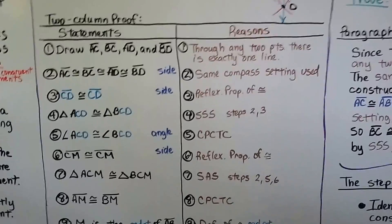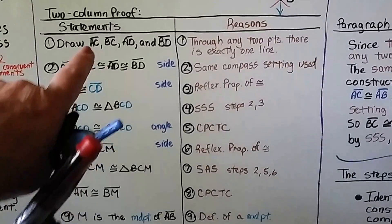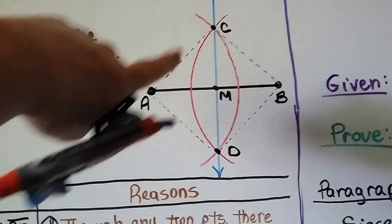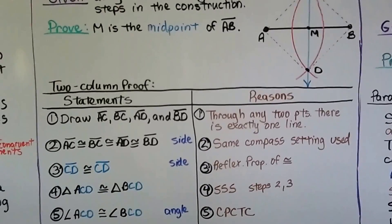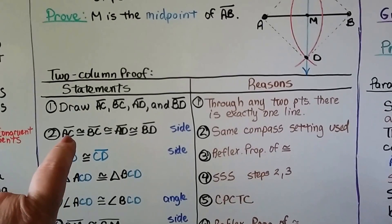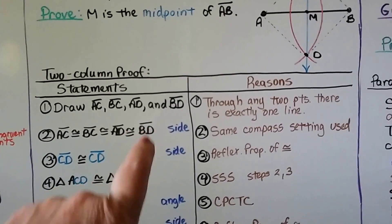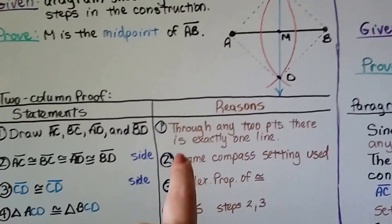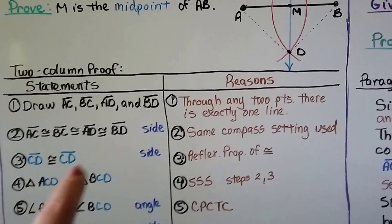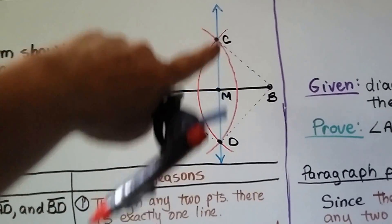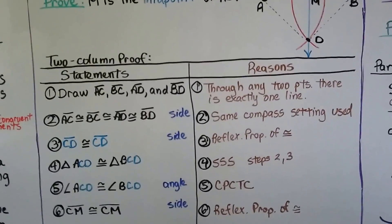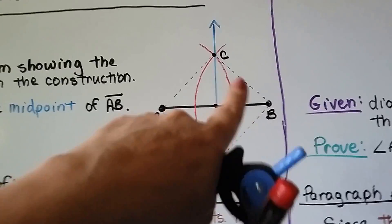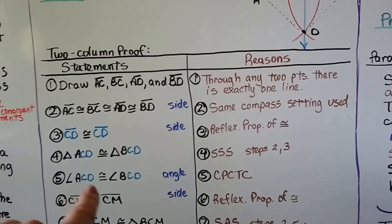We have a two-column proof with nine statements and reasons. Step 1: draw segments AC, BC, AD, and BD — those are the dotted lines — because through any two points there is exactly one line. Step 2: AC ≅ BC ≅ AD ≅ BD, because all these segments were drawn with the same compass setting. Step 3: CD ≅ CD by the reflexive property of congruence — the segment CD is shared by both triangles. Step 4: triangle ACD ≅ triangle BCD by SSS, using steps 2 and 3.